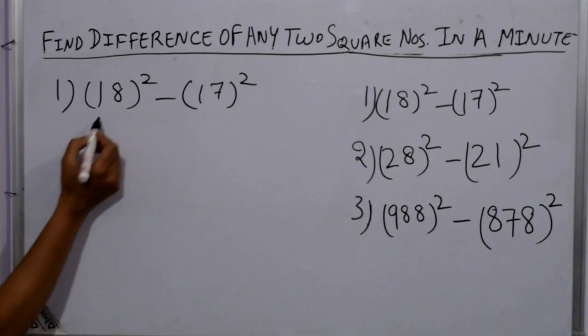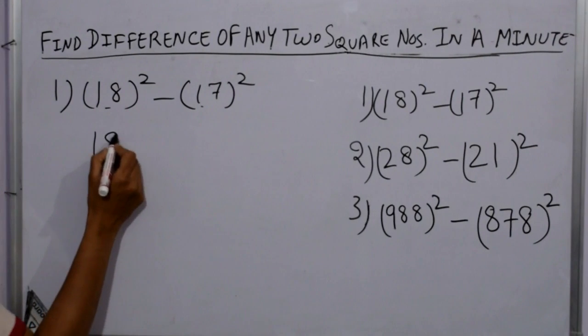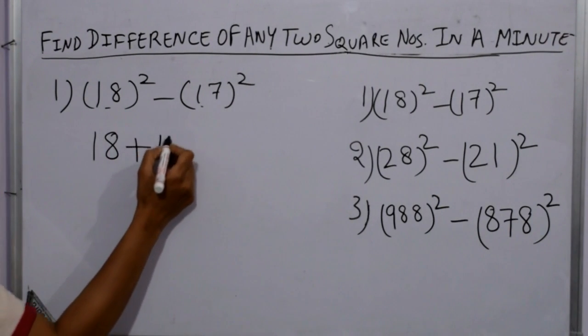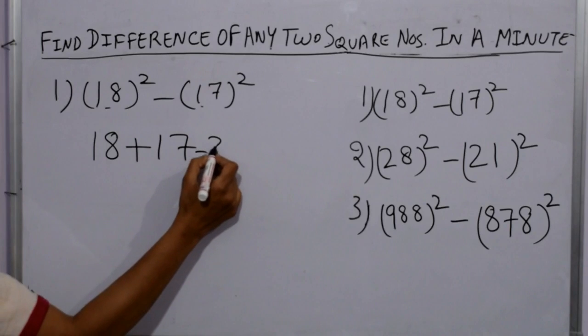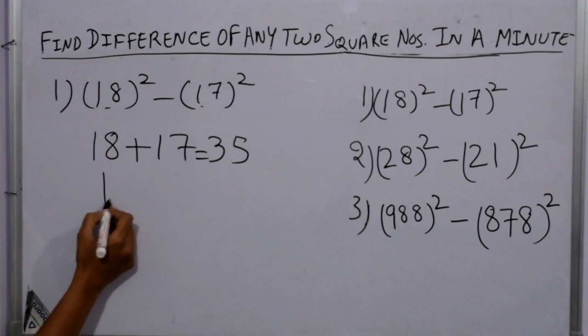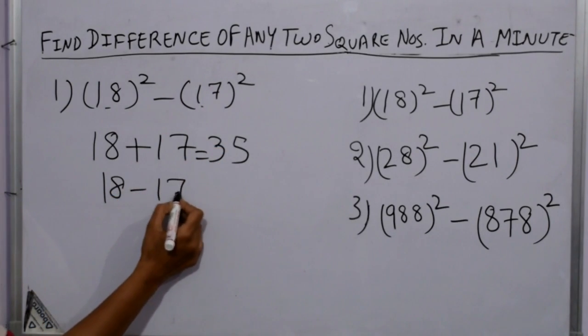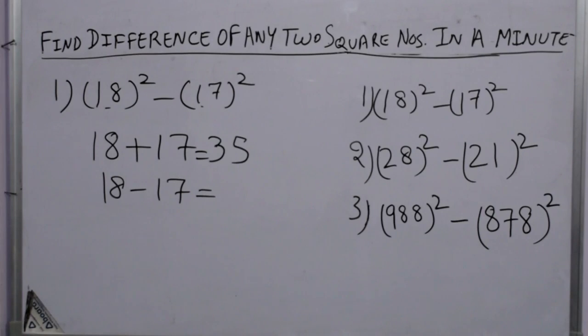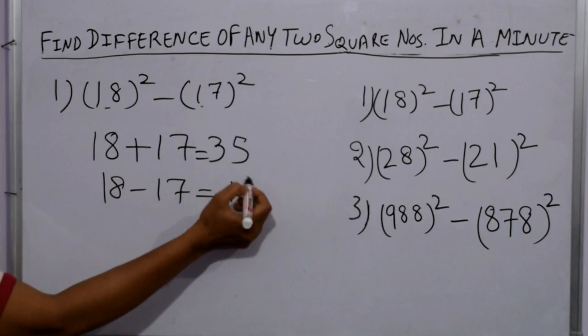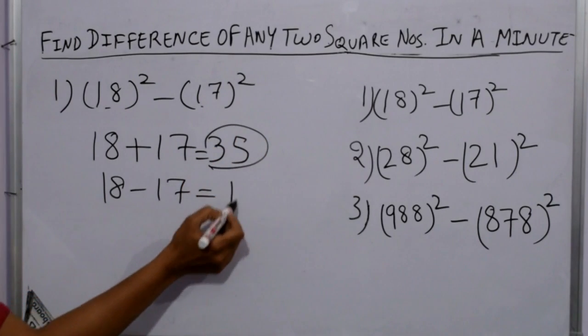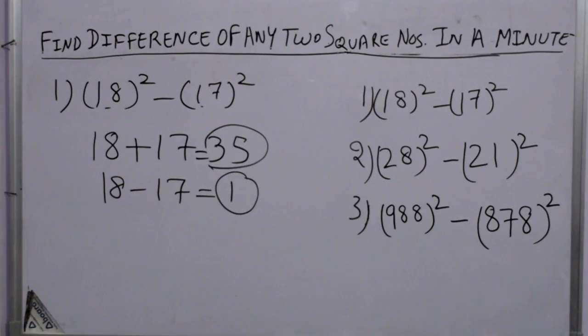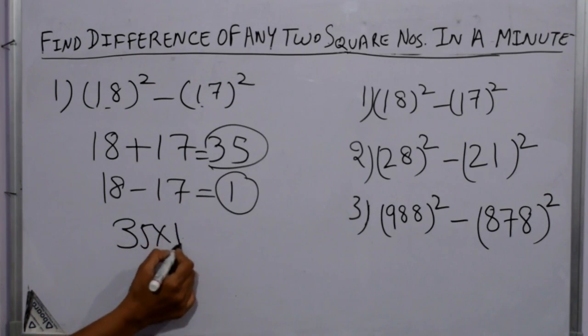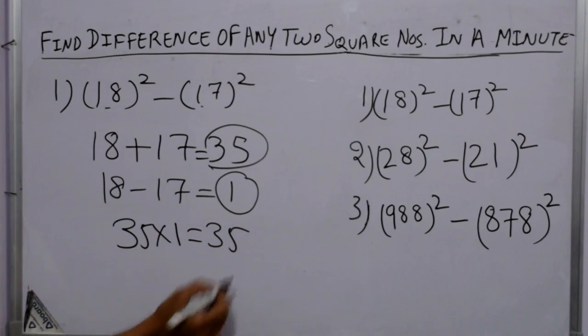Just take these two digits and add both the digits, we got 35. Now subtract both the digits, we got 1. Now just multiply 35 and 1, 35 ones are 35, and this is the answer.